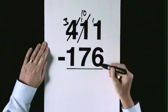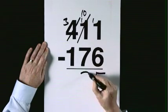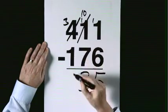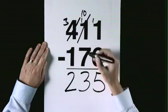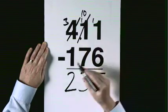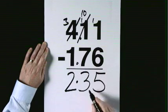11 takes 6 is 5. 10 takes 7 is 3. 3 take 1 is 2. 235. 4.11 subtract 1.76 would be 2.35.